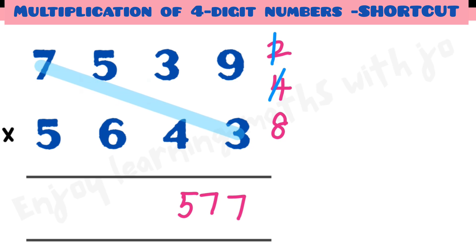Next step: 7 times 3 is 21 plus 9 times 5 is 45 plus 5 times 4 is 20 plus 3 times 6 is 18.